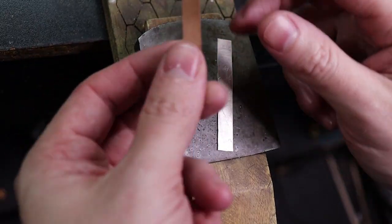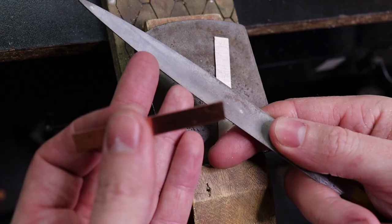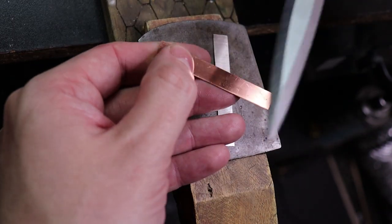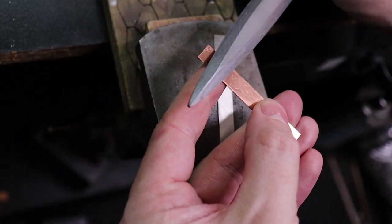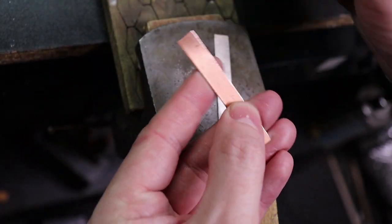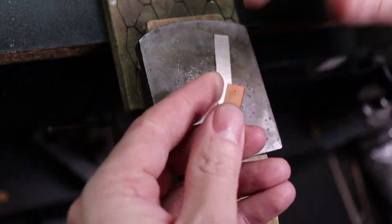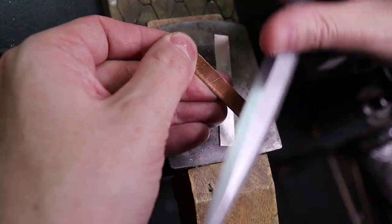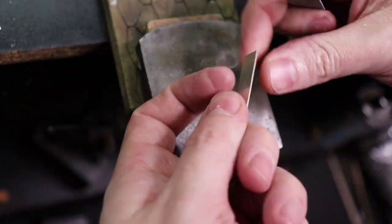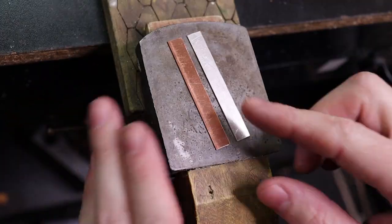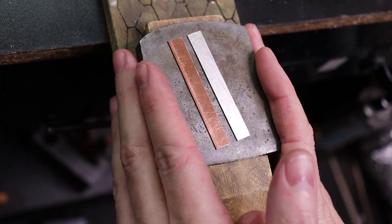Once you cut these out, they'll have a little bit of a burr on where you cut them. I'm just going to take my file and go over to take it down. Nothing too crazy. You can even sand this real quick and it would take it all down.